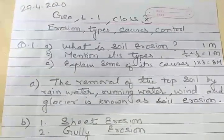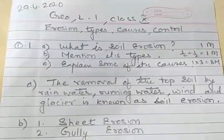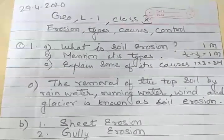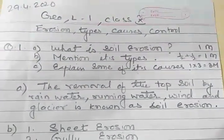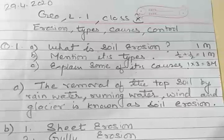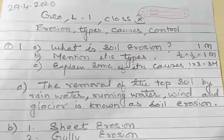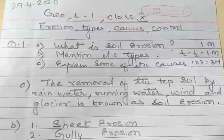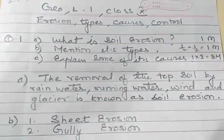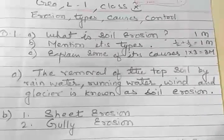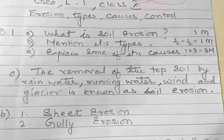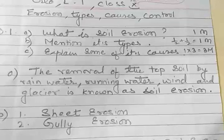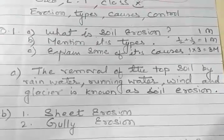The question pattern may be asked in this form: What is soil erosion? — that may carry one mark. Then mention its types — one mark. Explain some of its causes — any three points. All together it will be a combined five-mark question. The first part: what is soil erosion? The removal of the top soil by rainwater, running water, wind, and glaciers is known as soil erosion.